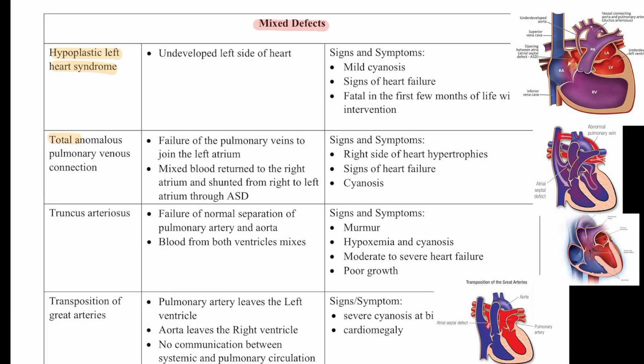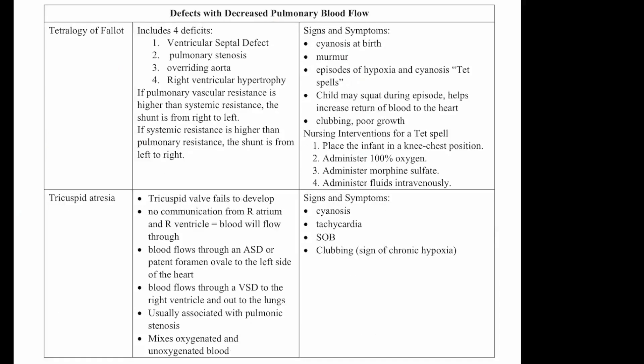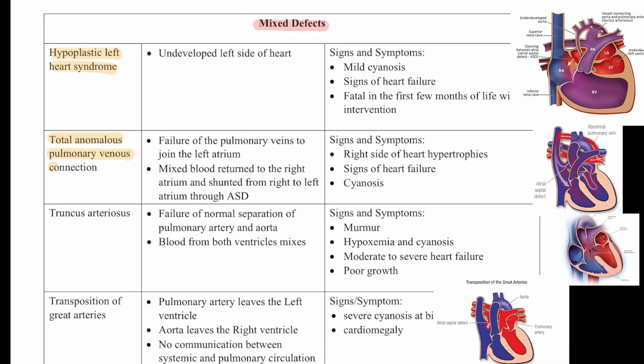Then we have total anomalous pulmonary venous connection. This is a failure of the pulmonary veins to join the left atrium. Mixed blood is returned to the right atrium and shunted from right to left atrium through the ASD. Signs and symptoms include right-side heart hypertrophy, signs of heart failure, and cyanosis.